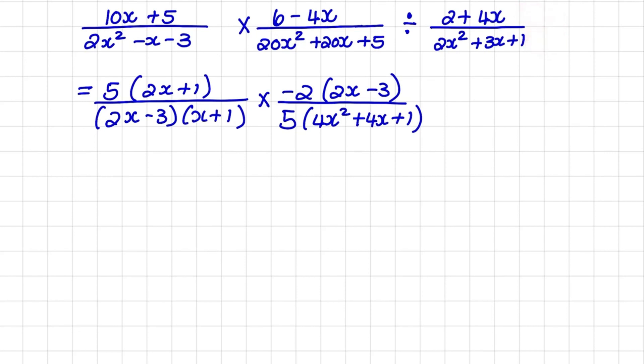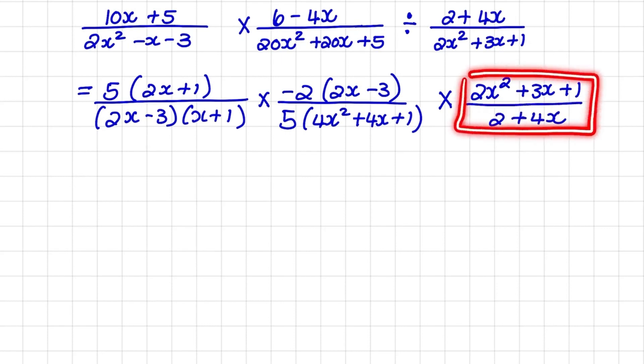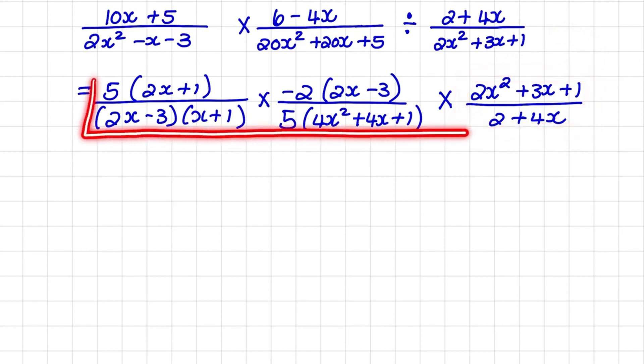So when I do that, I have multiplied by 2x squared plus 3x plus 1 over 2 plus 4x. So before I factorize my third algebraic fraction, let me inspect what happened here so far.